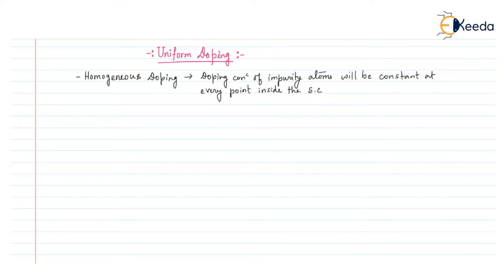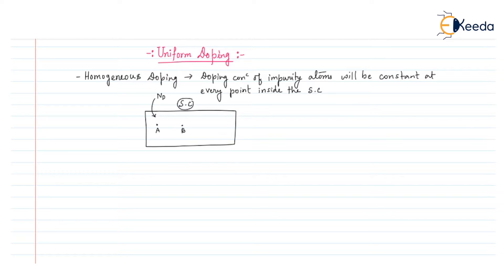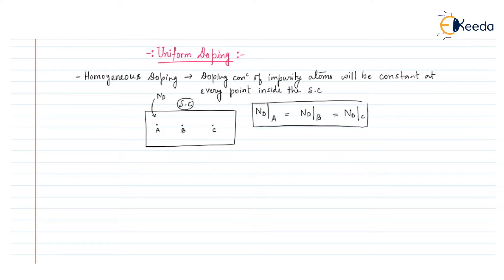Let us take a semiconductor bar. Now, let us consider that we are doping donor atoms, that is N_D. At every position, if I take three points A, B, and C, the doping concentration N_D at point A will be equal to the doping concentration at point B and the doping concentration at point C. All the doping concentrations at the three points will be similar. That's why it is called Uniform Doping.